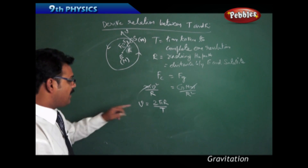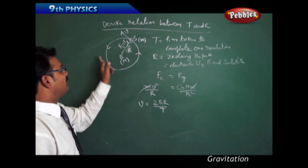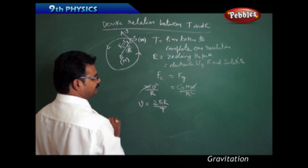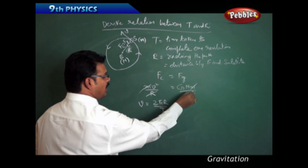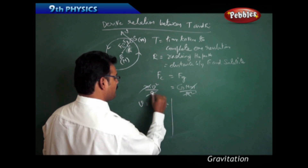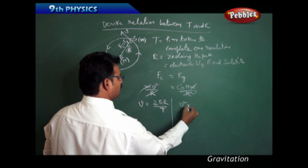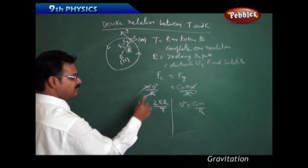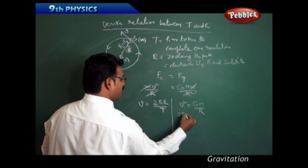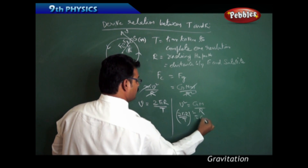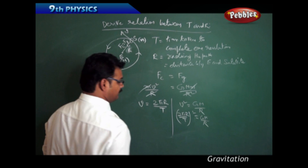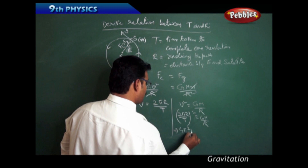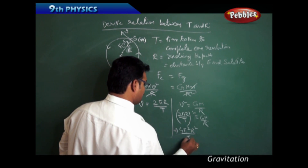Substituting the v formula, and noting that R also cancels, we get v² = GM/R. Substituting v = 2πR/T: (2πR/T)² = GM/R, which gives 4π²R²/T² = GM/R.